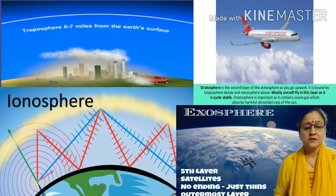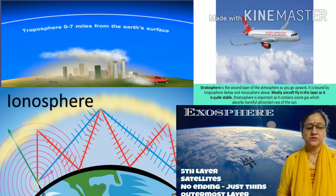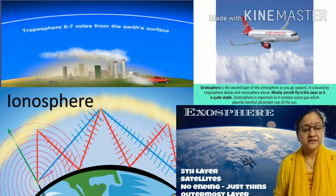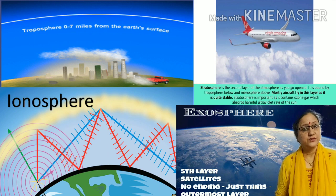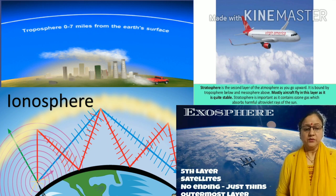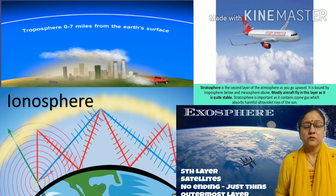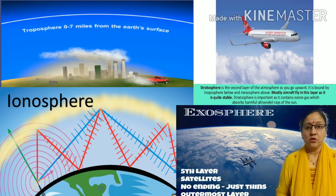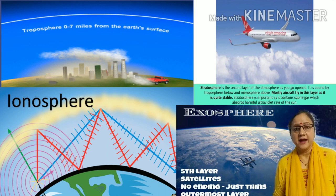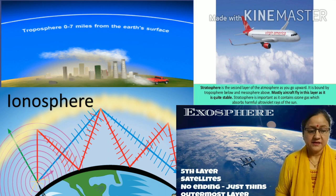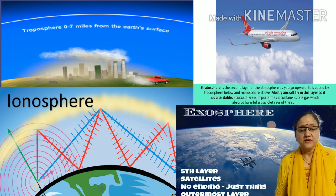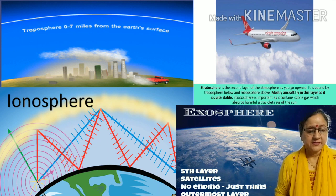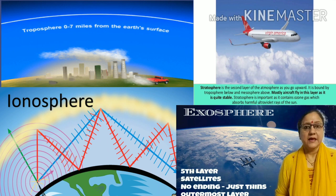Stratosphere is the second lowest layer of the earth's atmosphere. Here, the temperature rises with the rise in altitude. You will also find the ozone layer here, which helps to absorb the harmful ultraviolet rays of the sun. Jet planes and aeroplanes fly in this layer because it is free from weather disturbance. It extends about 15 to 50 km.